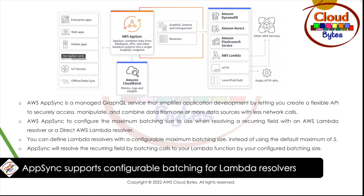AppSync lets you configure the maximum batching size to use when resolving a recurring field within an AWS Lambda resolver or a direct AWS Lambda resolver. You can define Lambda resolvers with a configurable maximum batching size instead of using a default maximum of five. AppSync will resolve the recurring field by batching calls to your Lambda function by your configured batching size. With AWS AppSync, you can create GraphQL APIs that your applications interact with over the internet, and it makes it easy to interact with data sources inside and outside of your AWS account using Lambda resolvers that execute business logic and fetch data.